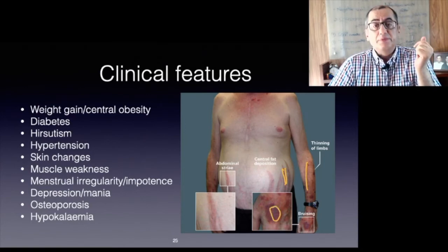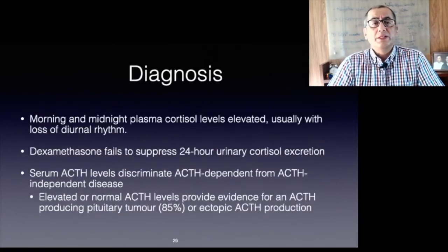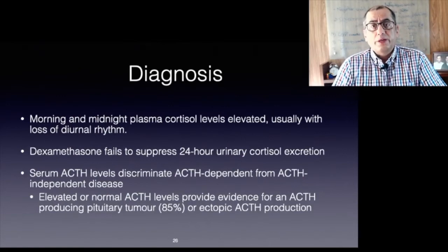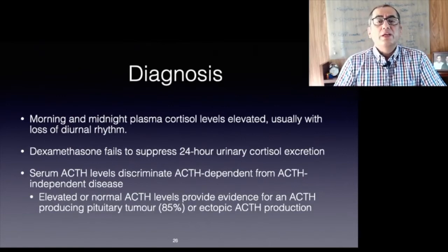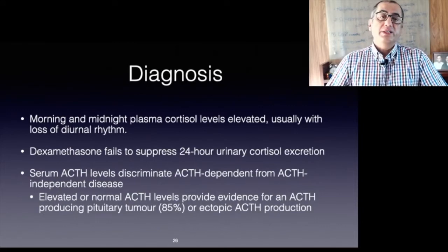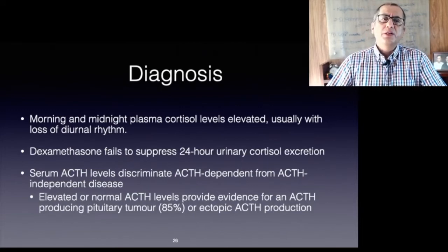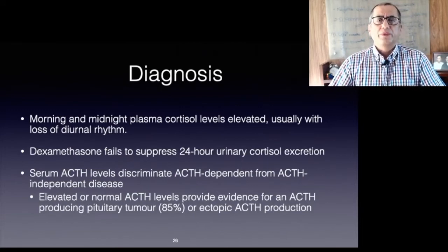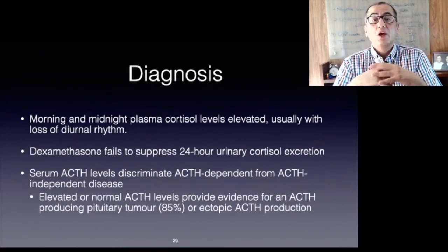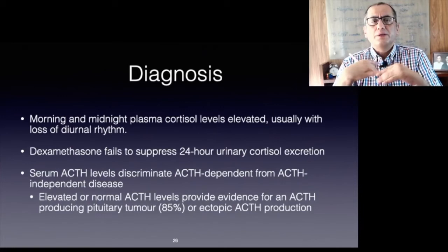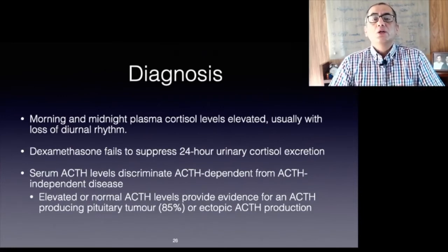Elevated or normal ACTH levels provide evidence for an ACTH-producing pituitary tumor — present in 85 percent — or ectopic ACTH production. In patients with elevated ACTH, MRI of the pituitary must be performed. If MRI is negative, venous sampling from the inferior petrosal vein can exclude a pituitary microadenoma. A CT scan of the chest and abdomen is then warranted to detect an ectopic cortisol-producing tumor.